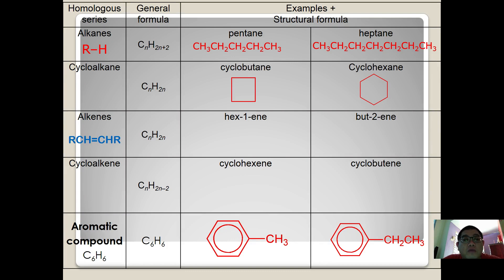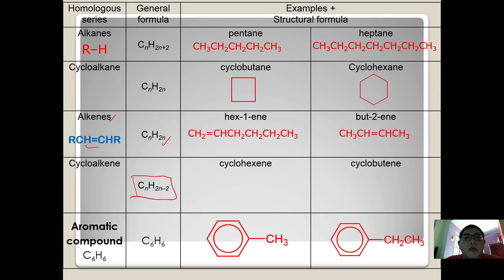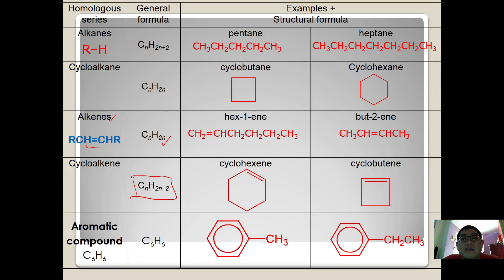The next functional group is alkene. Alkene has a functional group of C double bond C, and the general formula CₙH₂ₙ. For example, hex-1-ene and hex-2-ene. Cycloalkene is a derivation of alkene and has the general formula CₙH₂ₙ₋₂. For example, cyclohexene with a double bond, and cyclobutene with a double bond.